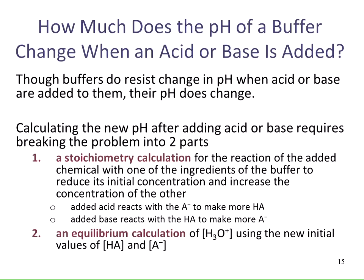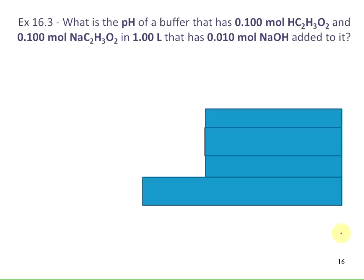How much does the pH of a buffer change when an acid or base is added? Though buffers resist changes in pH, their pH does change somewhat. Calculating the new pH requires breaking the problem into two parts. First, a stoichiometry calculation for the reaction of the added chemical with one of the buffer ingredients — added acid reacts with A- to make more HA, and added base reacts with HA to make more A-. Then, an equilibrium calculation of [H₃O+] using the new initial values of HA and A-.